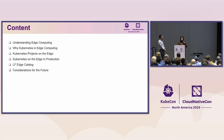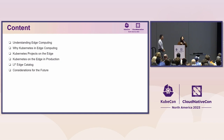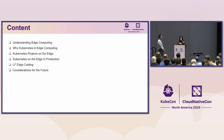LF Edge catalog — we'll take a look at the LF Edge landscape, focusing on the catalog of projects and resources available for those looking to implement Kubernetes at the edge. Considerations for the future — to conclude, we will discuss future changes, potential developments in edge computing, and how Kubernetes is expected to evolve in this space. Let's embark on this journey to edge computing with Kubernetes, understanding its framework, applications, and the exciting potential it holds for the future.